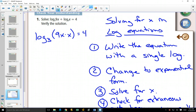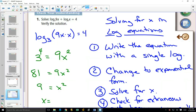So now we can go to step two. We can change this to exponential form. The base is 3. The exponent is 4. And the answer is 9x squared. 3 to the 4 from your powers chart is 81. Divide both sides by 9. Take the square root of both sides, and we get x is equal to plus or minus 3.